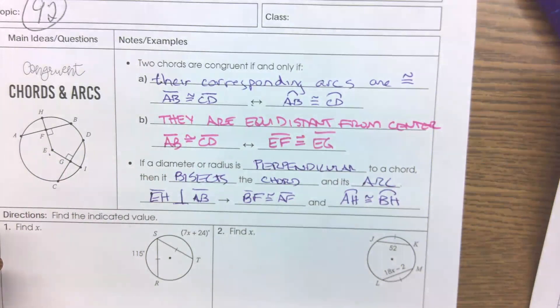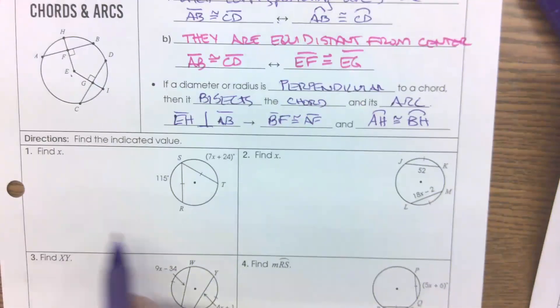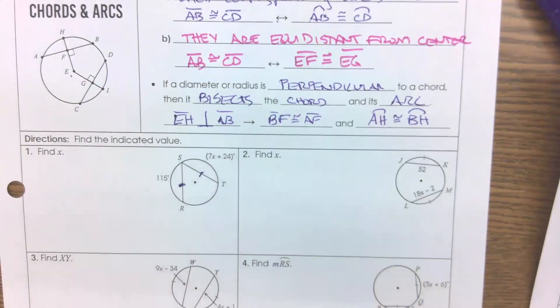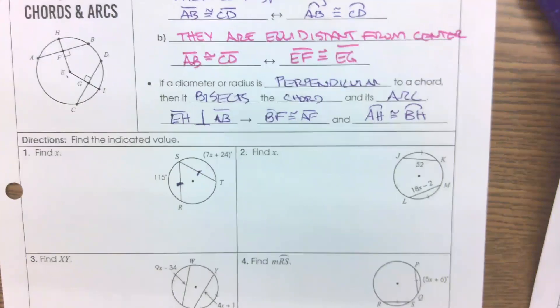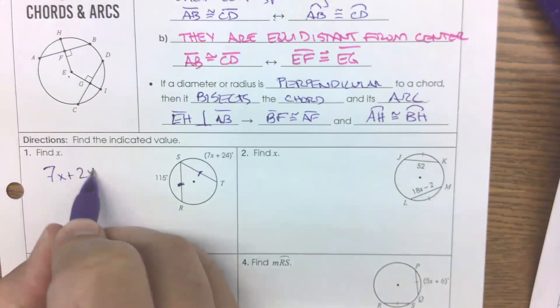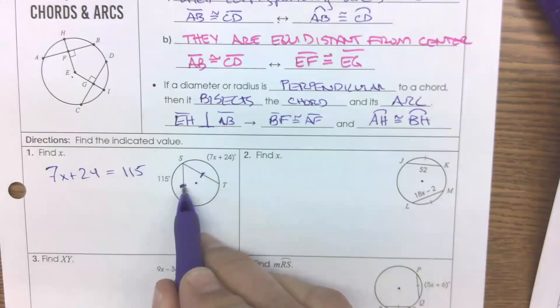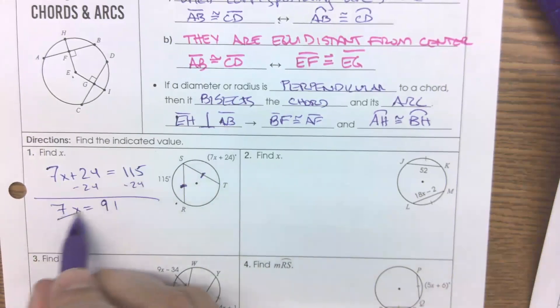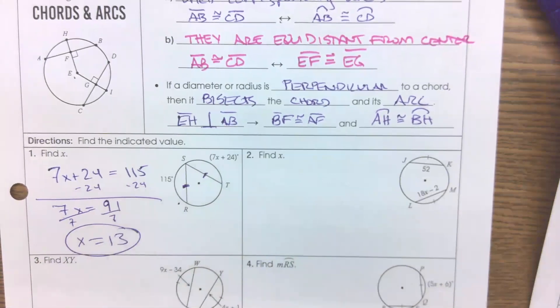So this is a small packet today. It's just two sides, but I'll take you through some examples of each type. Number one, I see here that these two chords are marked as congruent. And if the chords are marked as congruent, then the arcs are also congruent. I see X, that tells me I have to create an equation. So what would be my equation here? If these two chords are the same, then their corresponding arcs are also the same. So 7X plus 24 would equal 115. Minus 24. Minus 24, 7X equals 91, divide by 7, X equals 13.